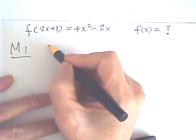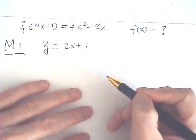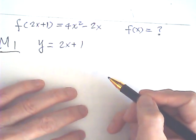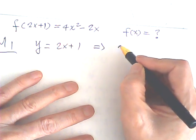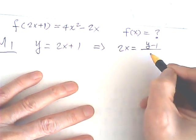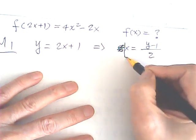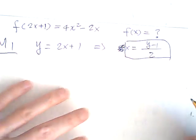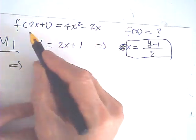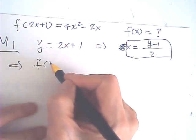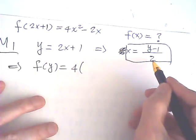You let y equal to 2x plus 1. From which we can find x equals (y minus 1) over 2. Then my function becomes f of y — where this is x.